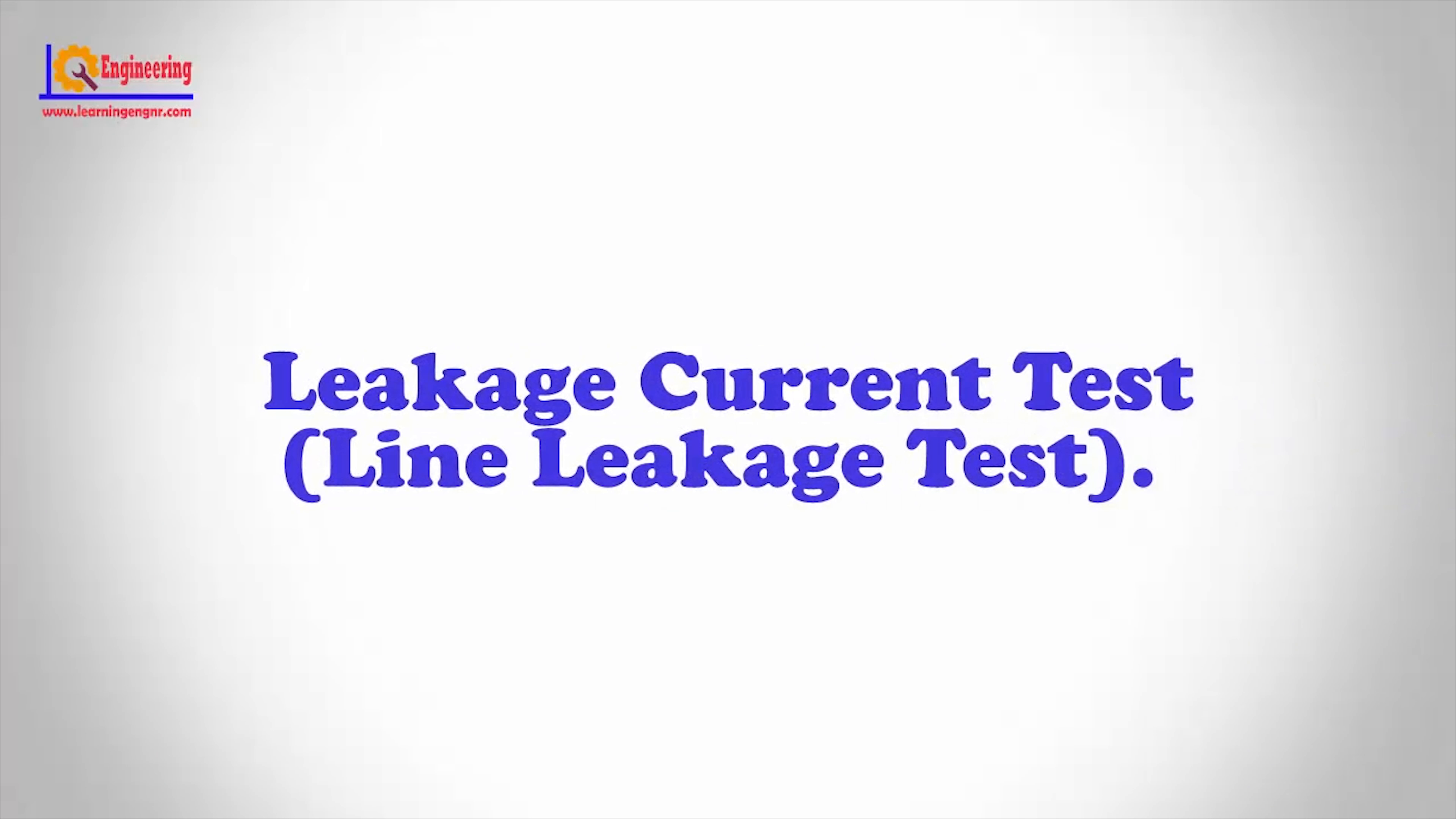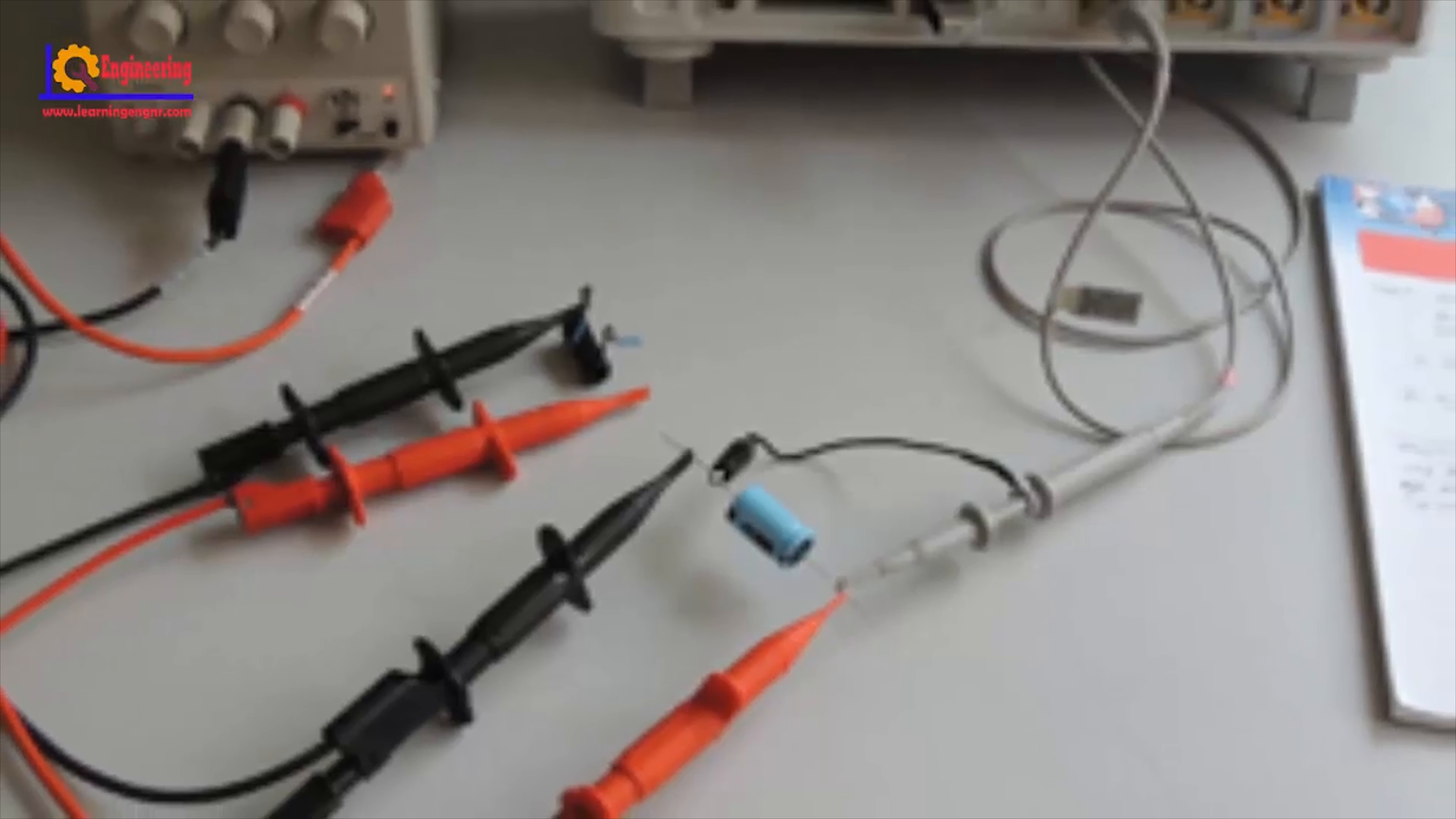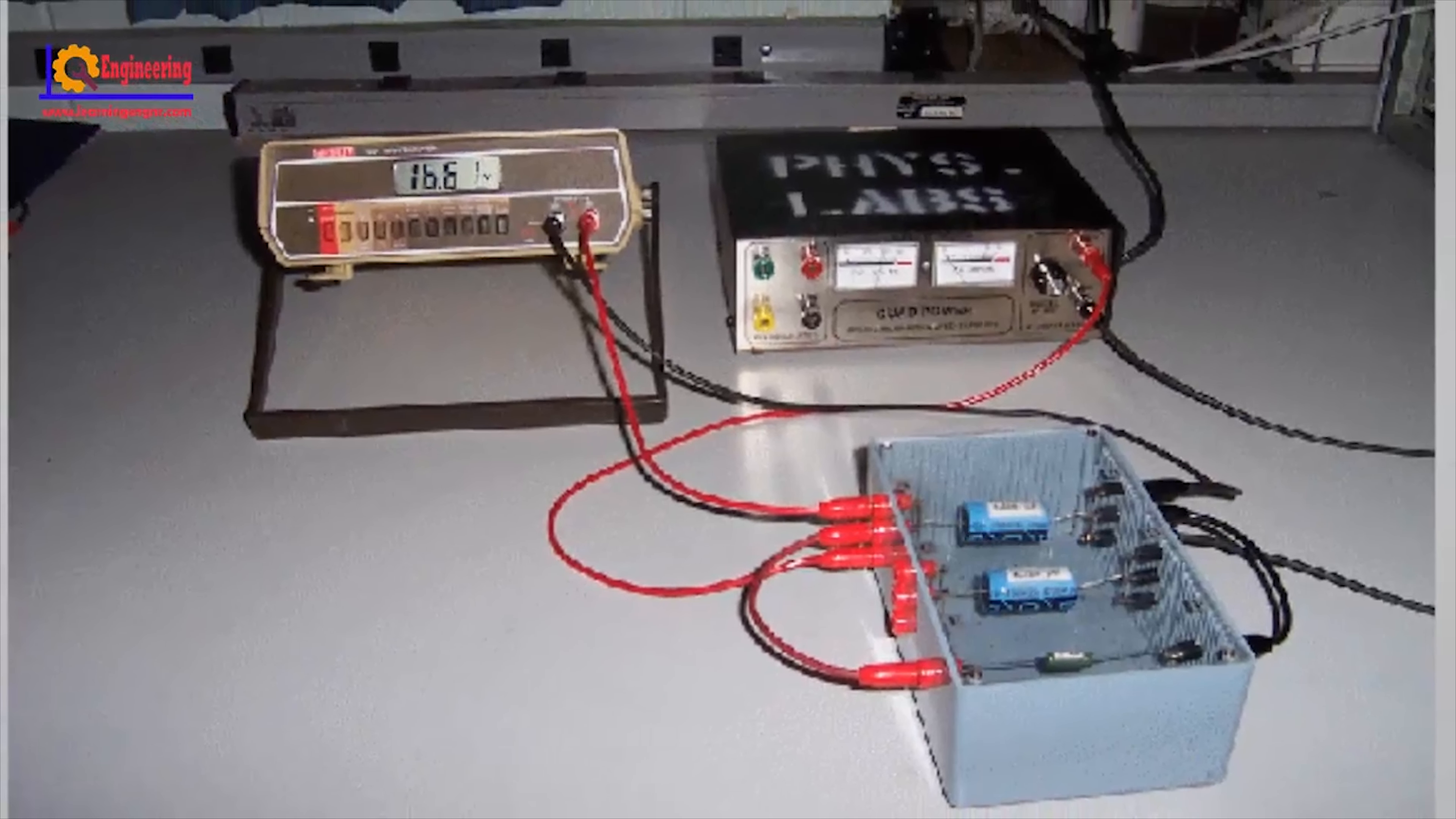Leakage Current Test Line Leakage Test. This test is to measure the undesirable leakage current that flows through or across the surface of the insulation or the dielectric of a capacitor. This test is generally carried out at 100% to 110% of the rated input voltage of the product under test.